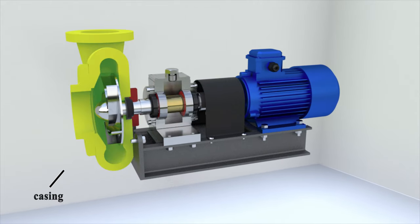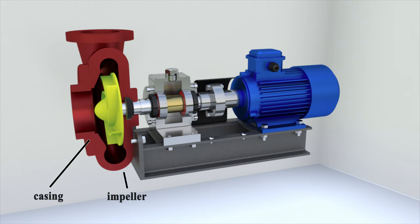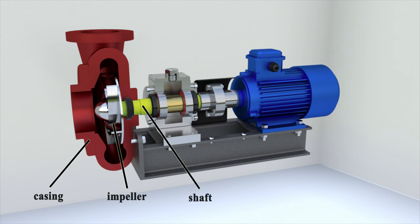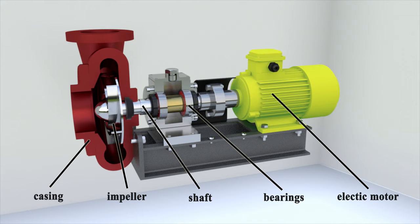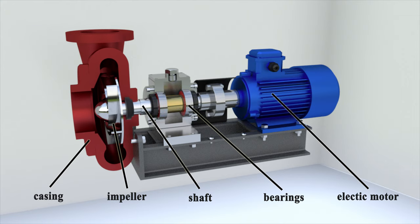The main elements of a centrifugal pump are the casing and the impeller, which drives the liquid. The impeller is mounted on a shaft. The shaft can rotate on bearings. The power is transmitted from the motor, most often an electric motor, to the shaft.